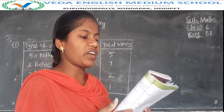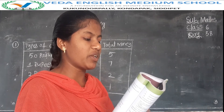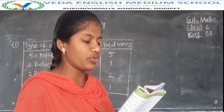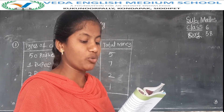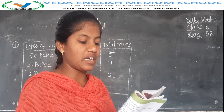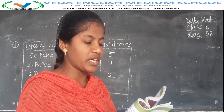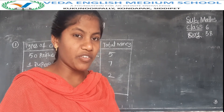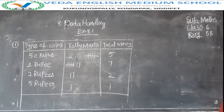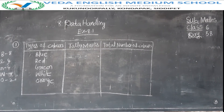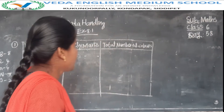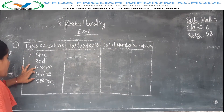Next, second question: the favorite color of 25 students in a class are given below — blue, red, green, white, blue, green, white, red, orange, green, blue, white, blue, orange, blue, blue, white, red, white, white, red, green, blue, blue, white. Write a frequency distribution table using tally marks, and find the least favorite color. Types of colors: blue, red, green, white, orange.